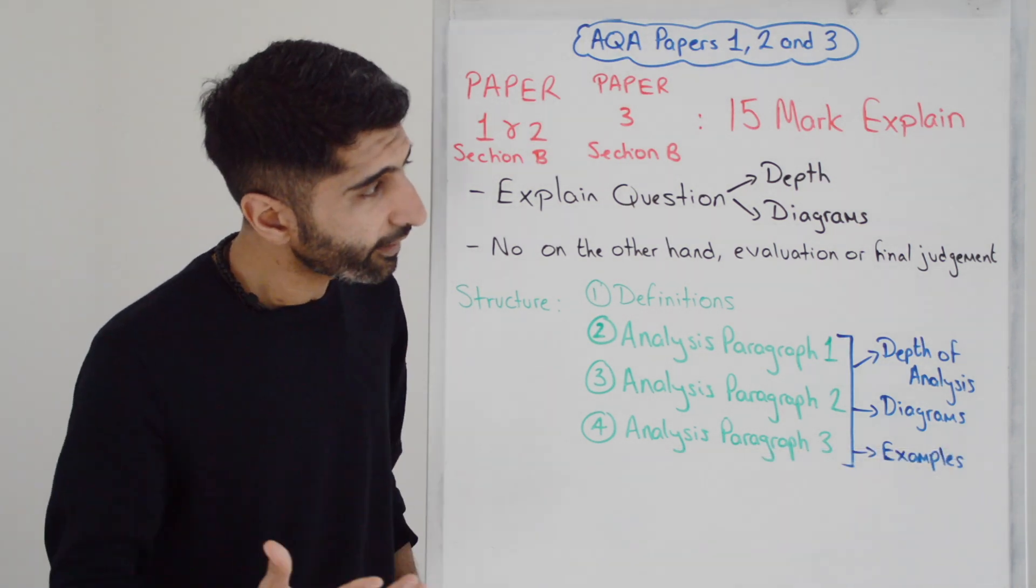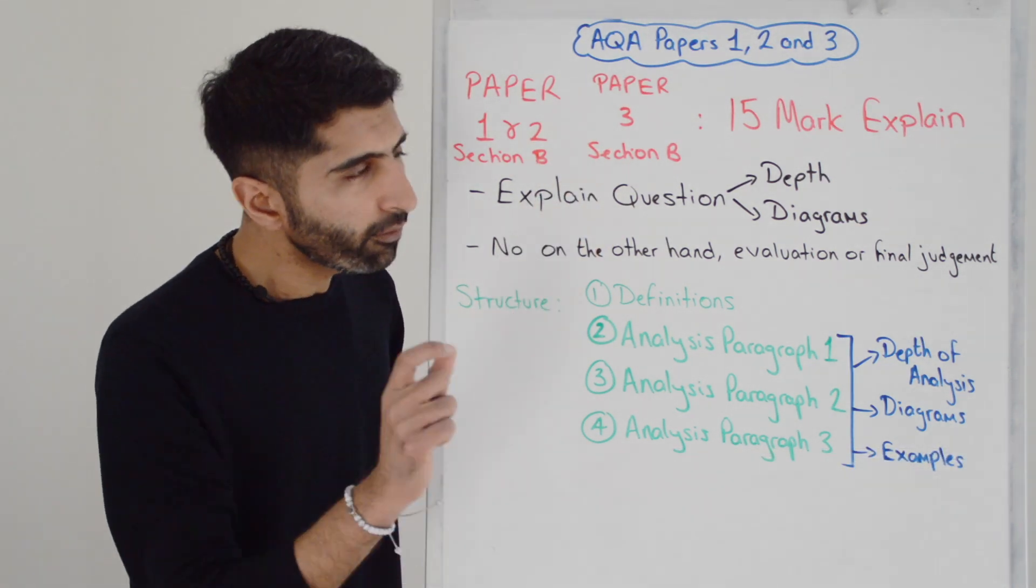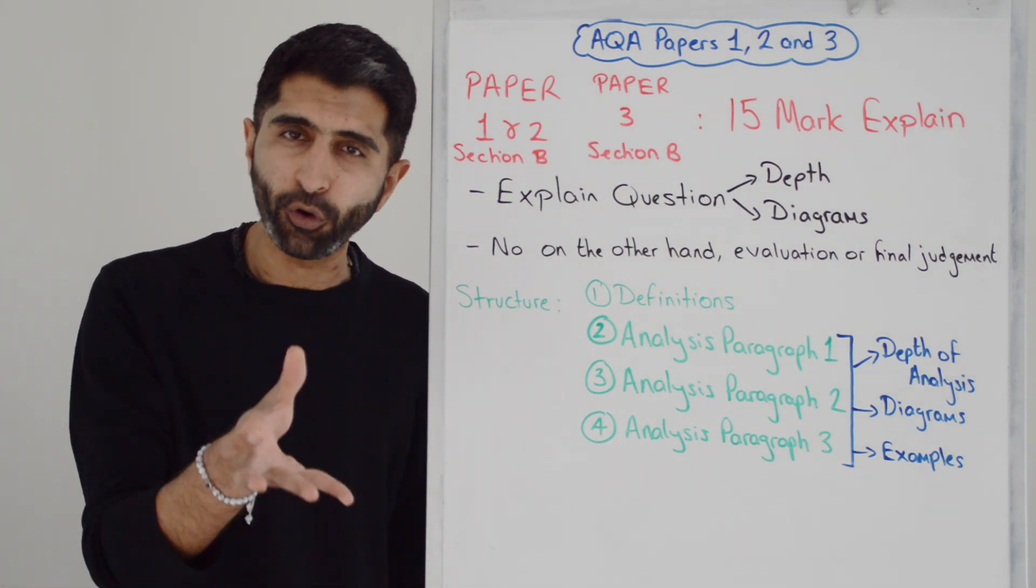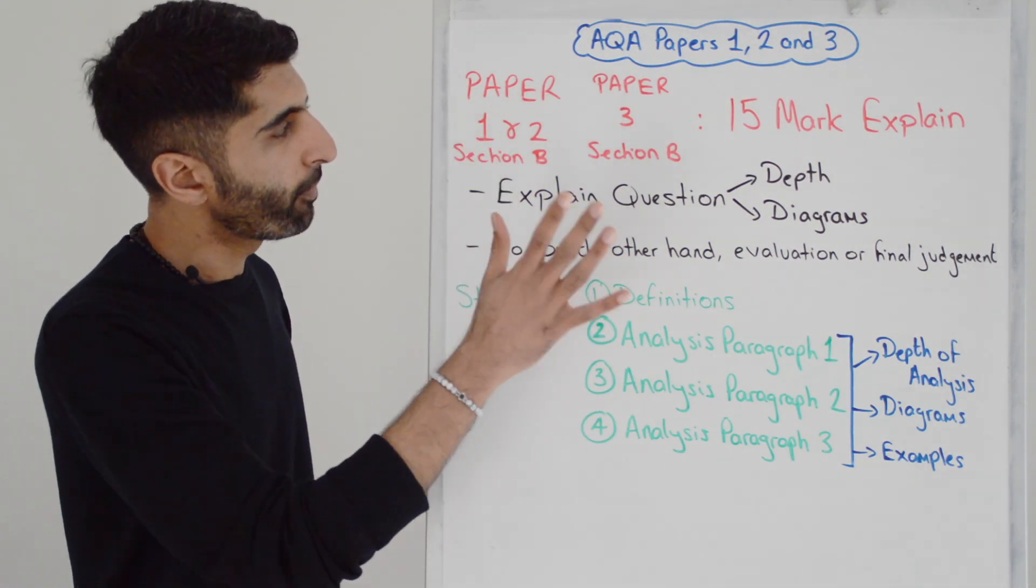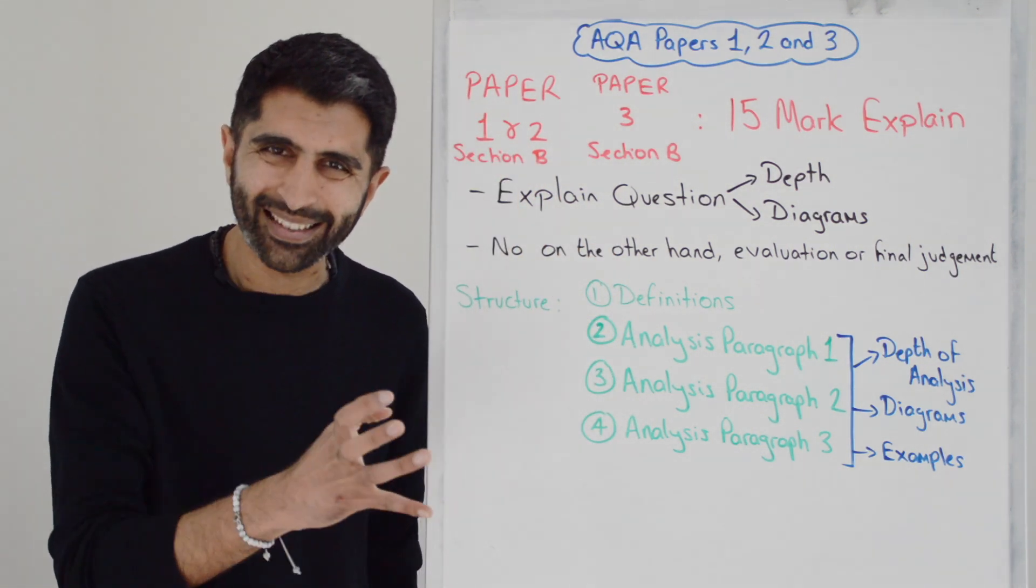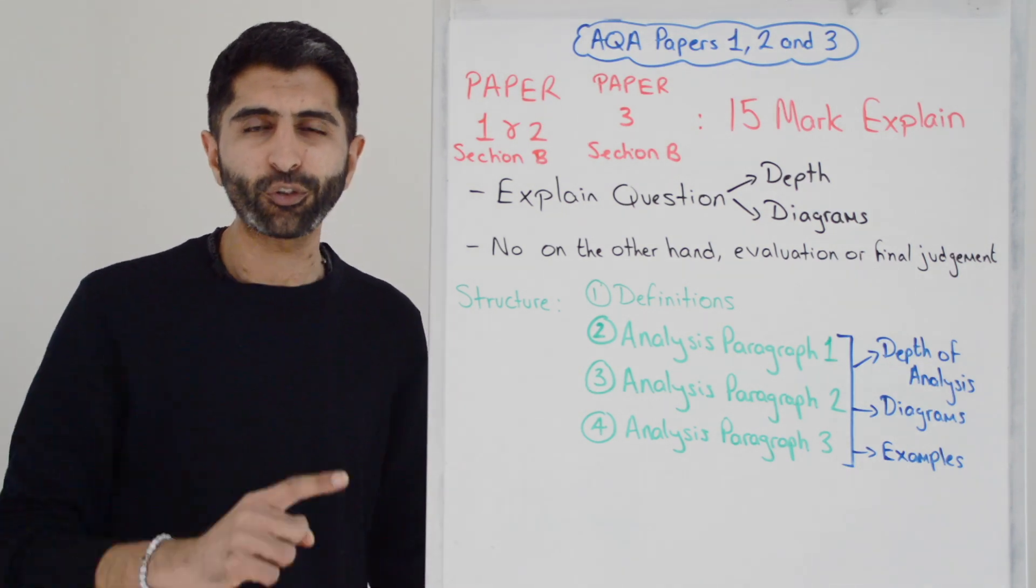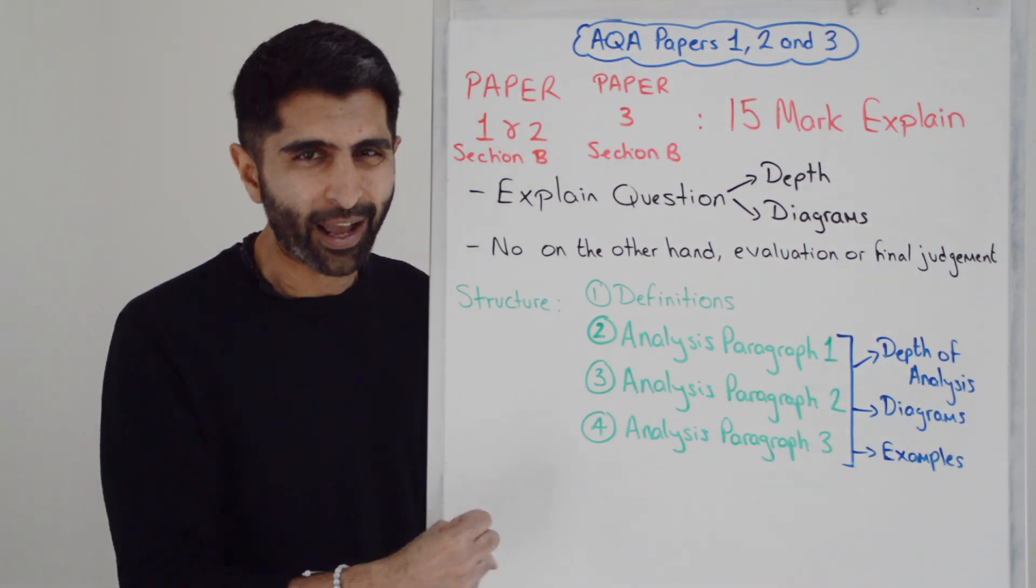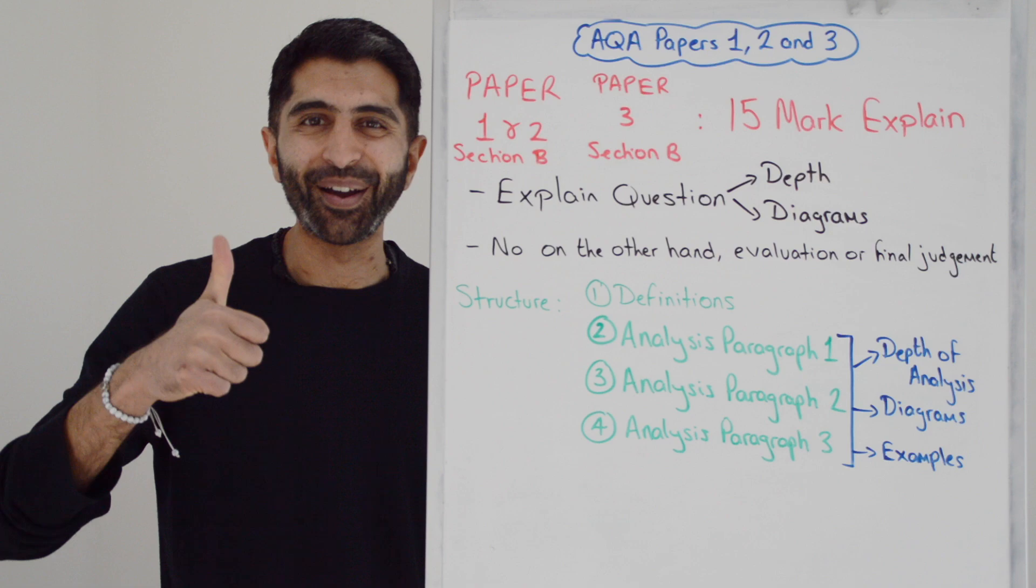But that's it, guys. That's how to write a 15-marker. You see, the one point of difference in Paper 3 is that you've got extracts to help you, whereas in Paper 1 and Paper 2, you don't. Otherwise, it's exactly the same kind of essay. Very simple to write. So thank you so much for watching. You can smash this now. I'll see you all in the next video.